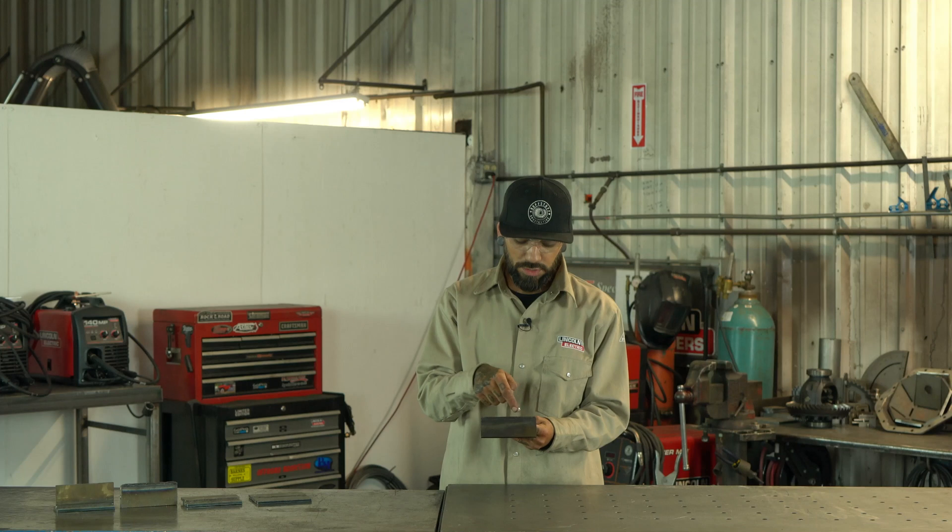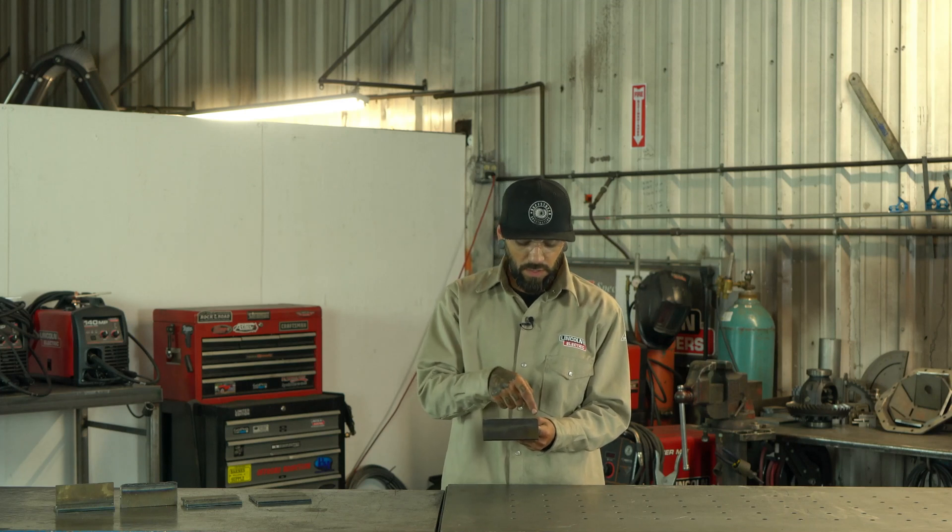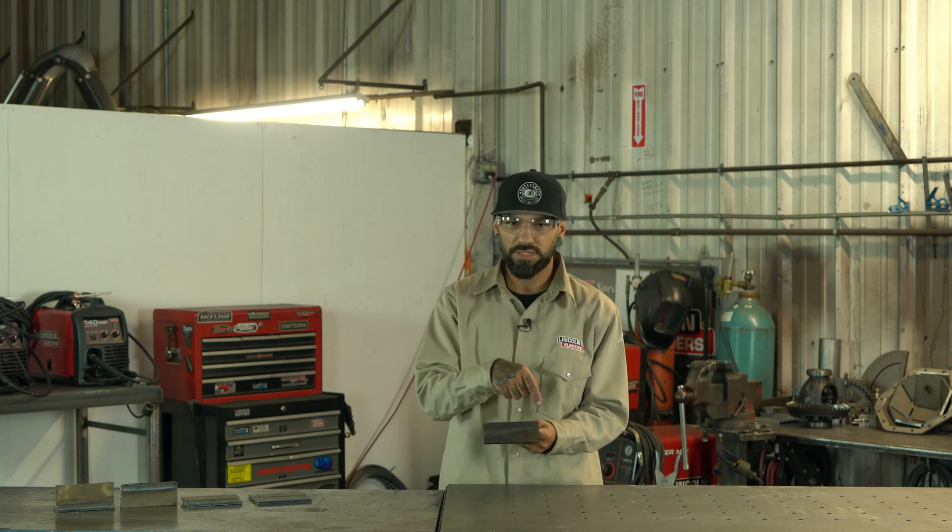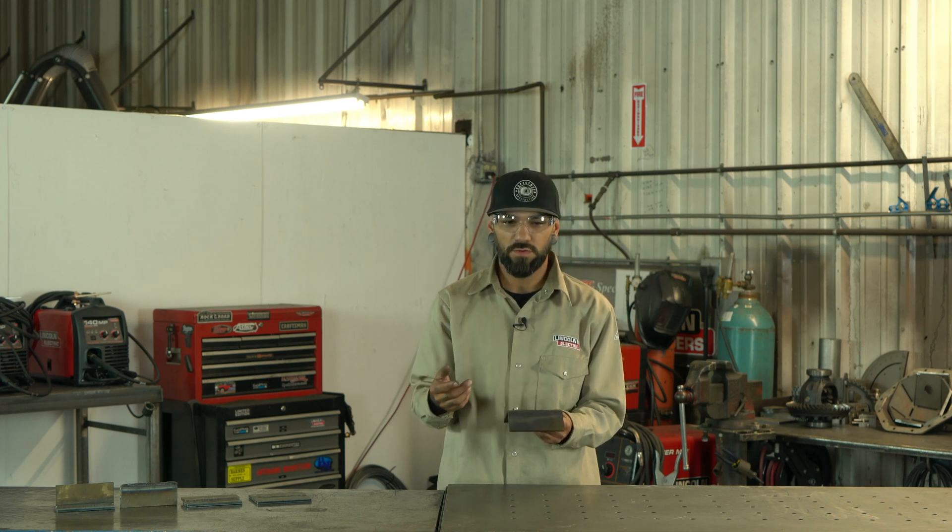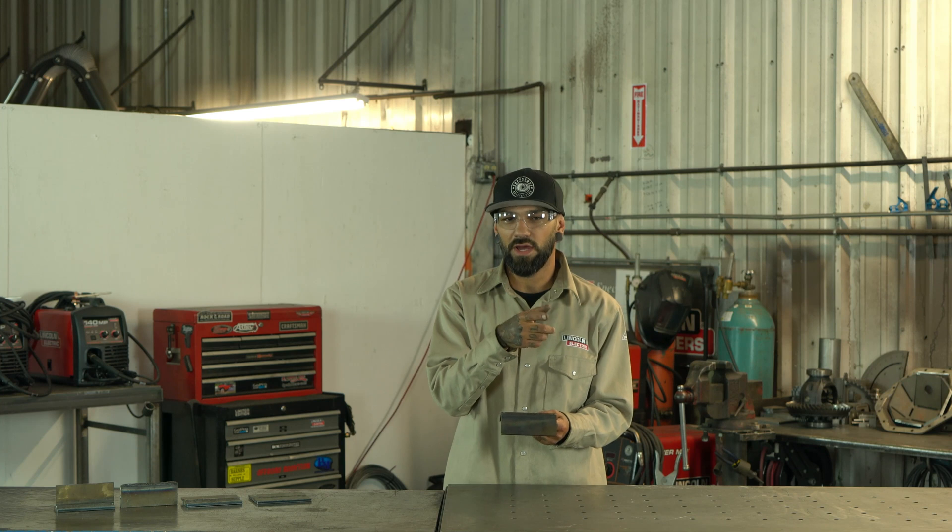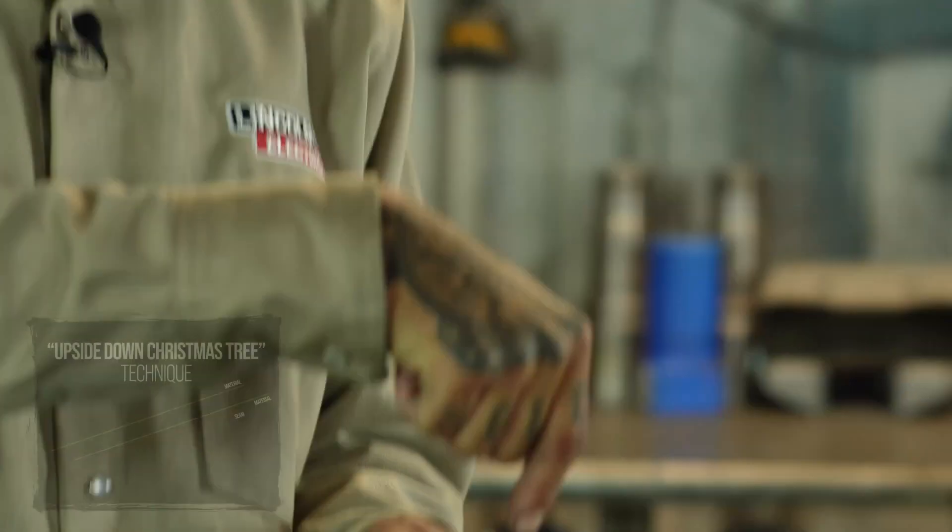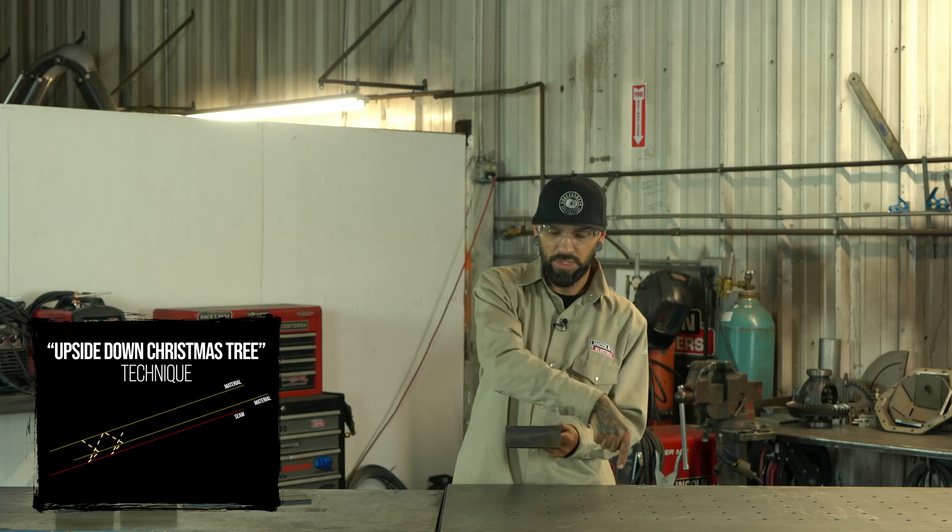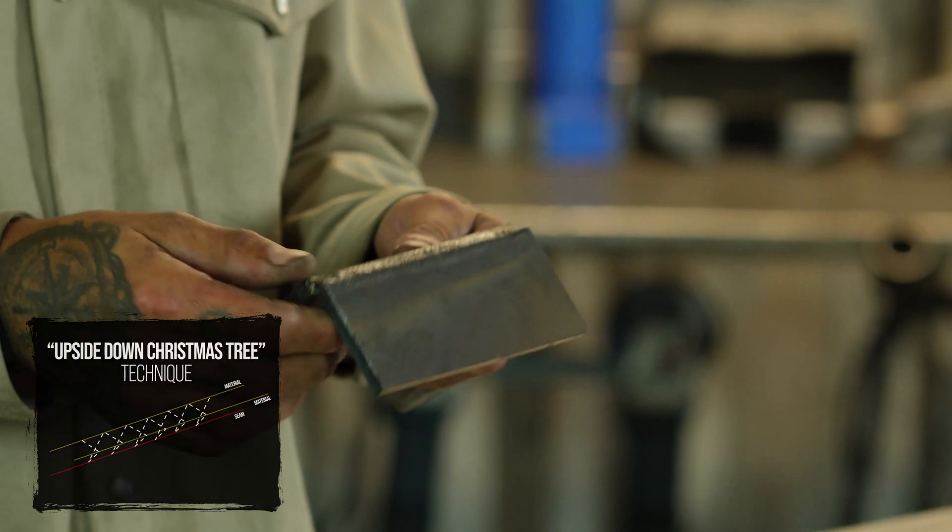For these you can either go straight forward and back on it, or if it's kind of a thicker gap you can do the cursive E style, or you can do what would be an upside down Christmas tree. That's basically you start way down in the center, bringing your weld straight up to the corner, across the corner, diving back down. This one I use more of a cursive E style, so again I'm starting down in my seam, bringing my weld up, bringing it over to the backside, and just following that all the way down.